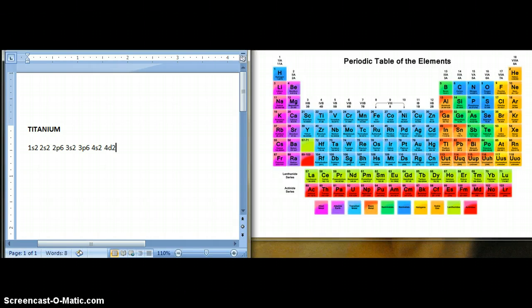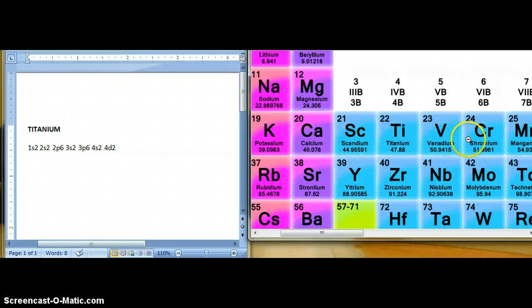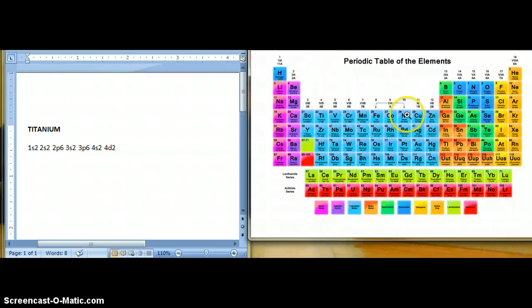4D2. You don't put 10 over here because we're only going for titanium and it has atomic number 22. So you don't fill up the whole row right here because it stops right here.